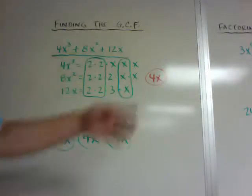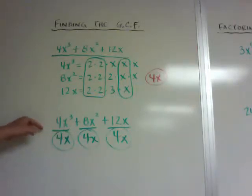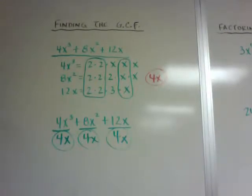So if you want to list out all the prime factors, you can and then circle all the common ones. Or you can just do it this way, where you just put it over, and then find what the common factors are. So look for the greatest common factor.